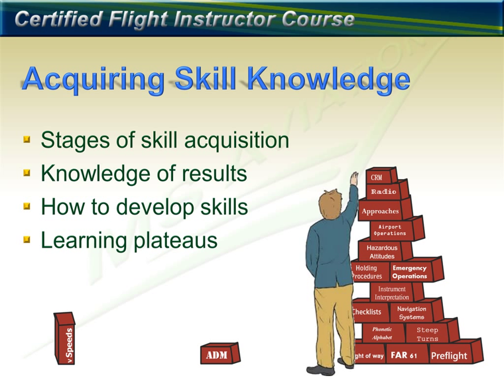Acquiring skills can be explained in three stages. First, the student is in the cognitive stage. This means that learning is based in factual knowledge. The student can memorize steps in a procedure and may be unaware of their progress, or will fixate on one performance-related item.